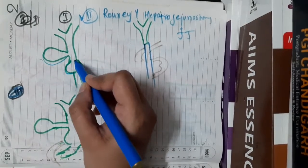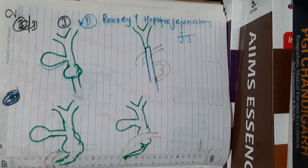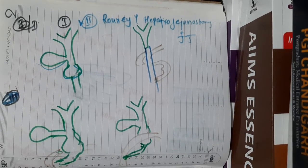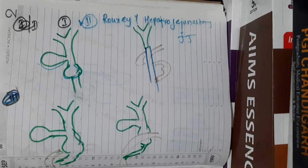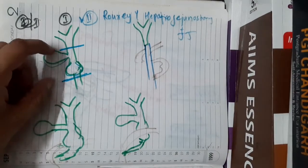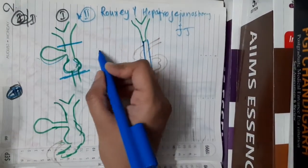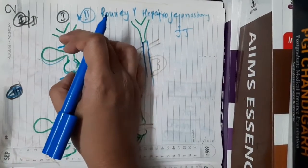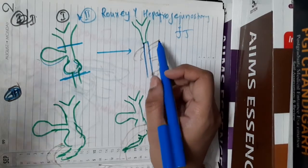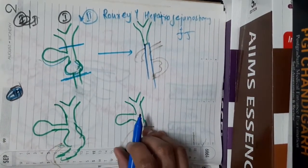Because choledocal cyst carries an increased risk of cholangiocarcinoma and gallbladder carcinoma, we resect the cyst along with the gallbladder and then anastomose the remaining structures.